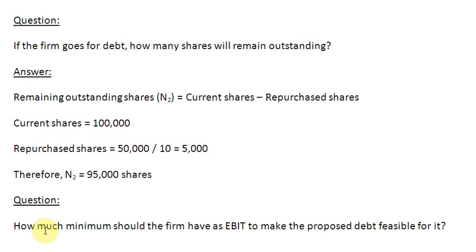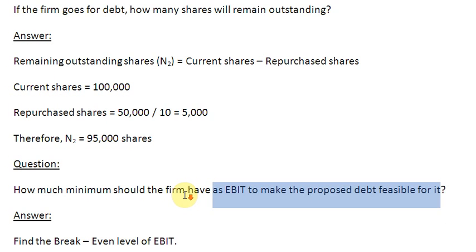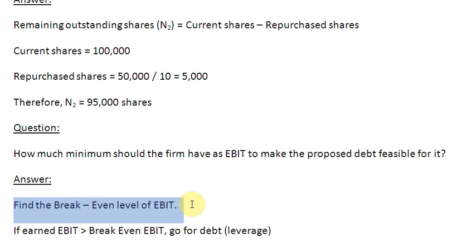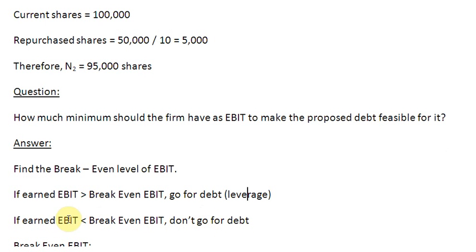The second question is: how much minimum should the firm have as EBIT to make the proposed debt feasible? The answer is to find the break-even level of EBIT. If earned EBIT is greater than the break-even EBIT, you can opt for borrowing $50,000 and add leverage to your capital structure. Otherwise, if earned EBIT is less than the break-even EBIT, you remain as is — you don't borrow and don't add leverage.